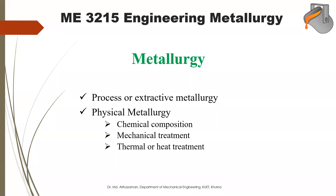The second type is physical metallurgy, which is what I will discuss in this course. Physical metallurgy covers how the properties of metals and alloys depend on their chemical composition. It also covers mechanical treatment — for example, how cold rolling or hot rolling affects the grain structure of a material, which in turn changes its properties.